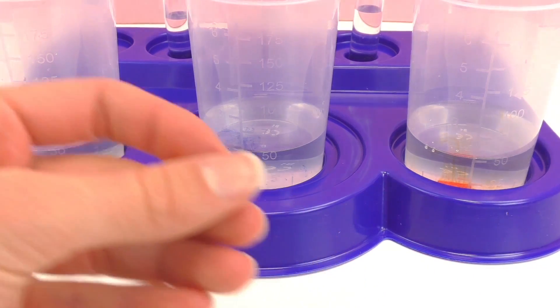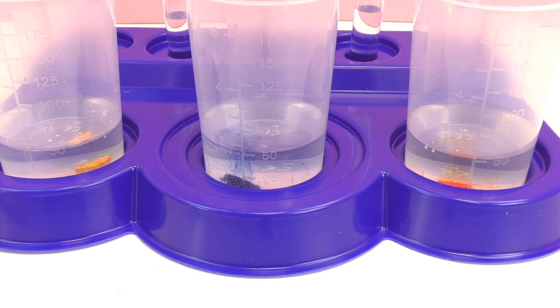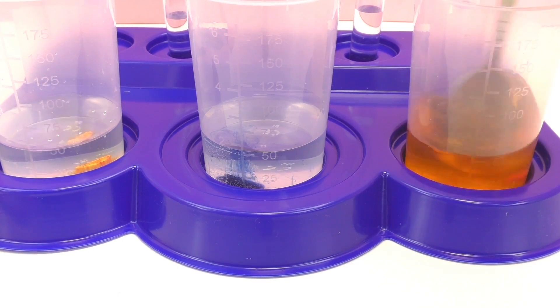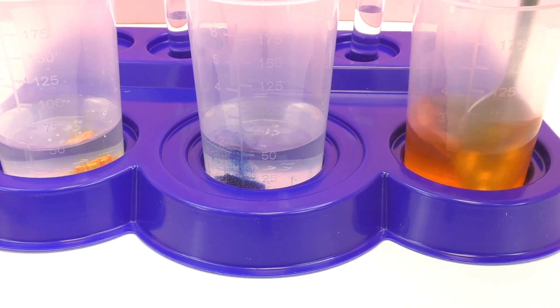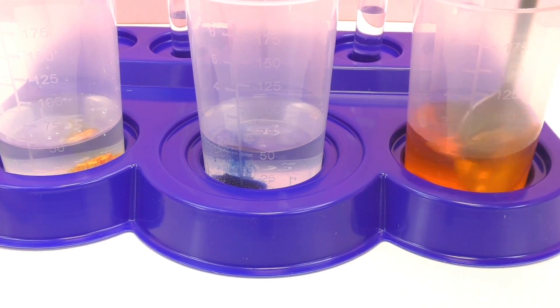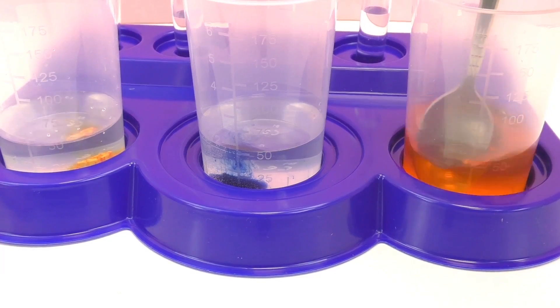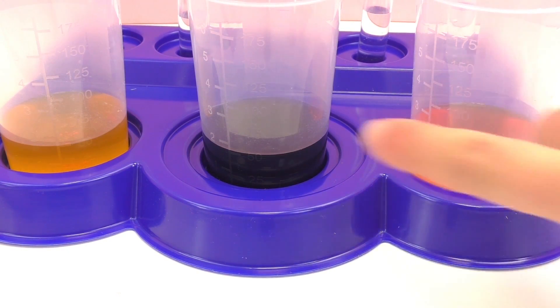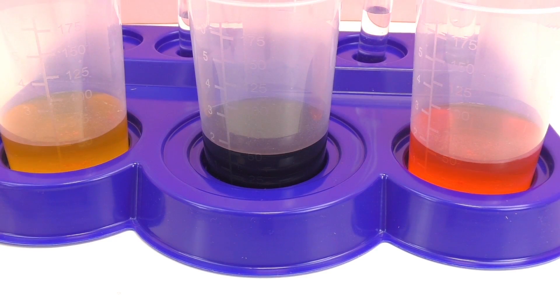Next up I'm going to mix them with the spoon and make sure it's really mixed up well. So here we have all of the colors mixed. As you can see they're pretty intense. We have red, blue, and yellow.